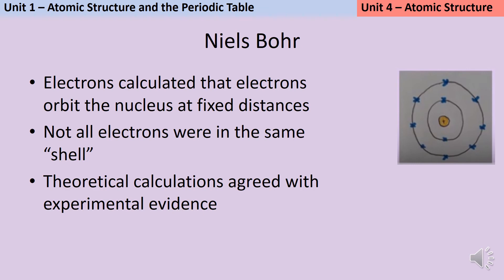Niels Bohr calculated that the electrons needed to orbit the nucleus at fixed distances. Basically he said that not all electrons were in the same shell. This idea that we have up to two electrons in the first shell and then up to eight electrons in the second shell comes from him. He did mathematical calculations to prove this, and it turned out that his theoretical calculations agreed with experimental evidence that other people had done.